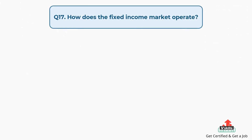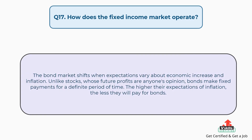Question number seventeen: how does the fixed income market operate? The answer is, the bond market shifts when expectations vary about economic growth and inflation. Unlike stocks, whose future profits are uncertain, bonds make fixed payments for a definite period of time. The higher the expectations of inflation, the less investors will pay for bonds.